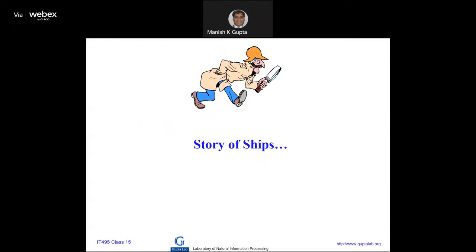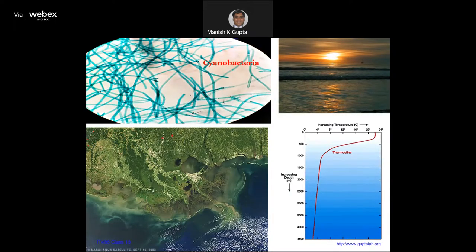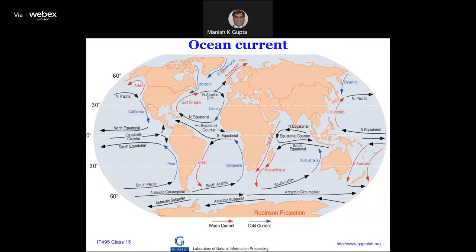We were talking about the story of ships. Because of bacteria in the ocean, we have warm and cold water currents. The difference between warm and cold water creates currents that were important for the Age of Discovery — for Europe to discover many things, for example, the American side or the East side, especially China and India. When I was visiting Saudi Arabia, I learned that 'Bharat' means spices for them. So all these interesting things happened because of these routes.